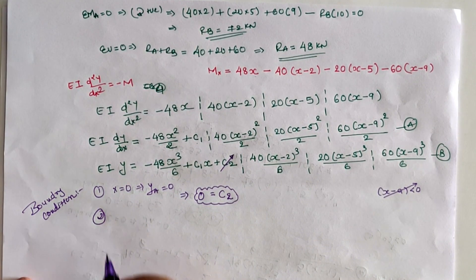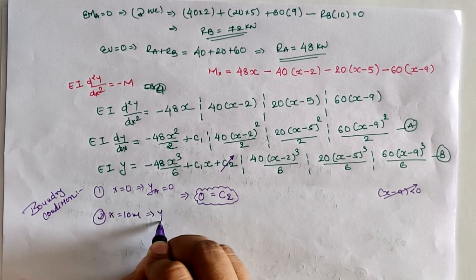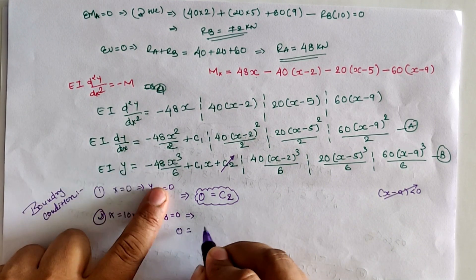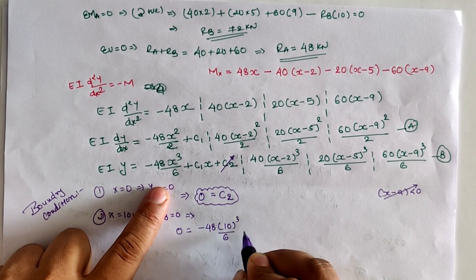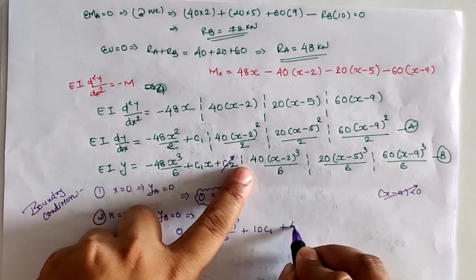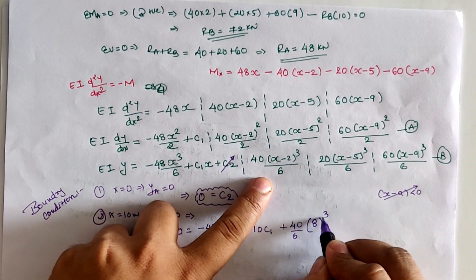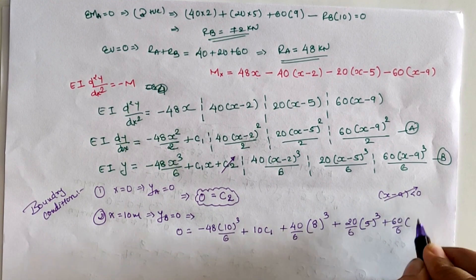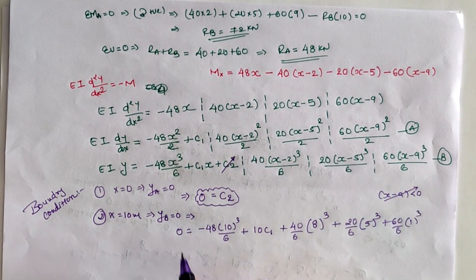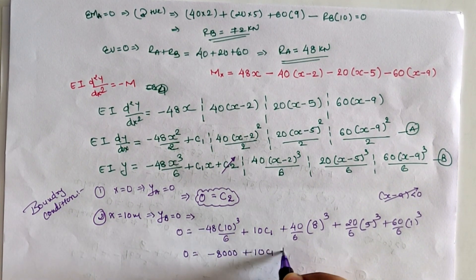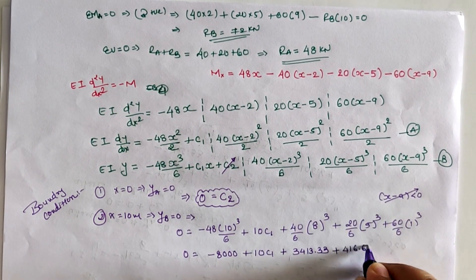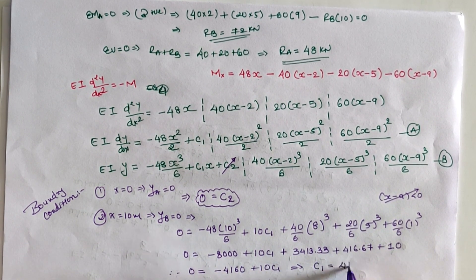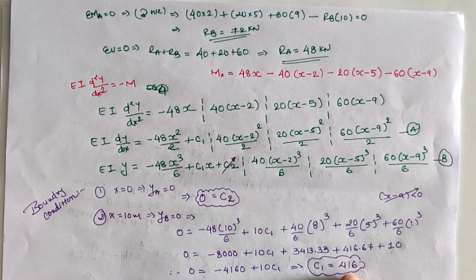The second boundary condition is x = 10 m, y = 0 at location B. Putting y = 0 and x = 10 into the deflection equation: −48×(10³)/6 + 10×C1 + (40/6)×(10−2)³ + (20/6)×(10−5)³ + (60/6)×(10−9)³ = 0, where (10−2) = 8, (10−5) = 5, and (10−9) = 1. Solving, we get C1 = 416.